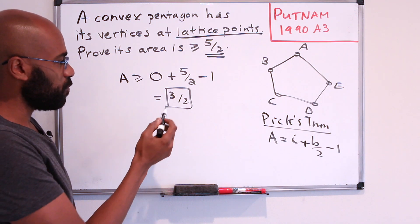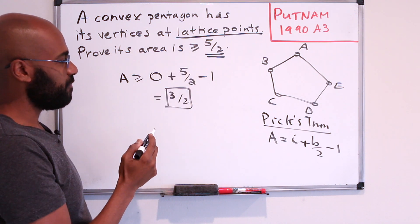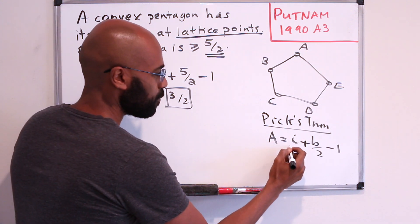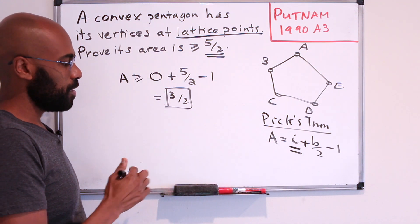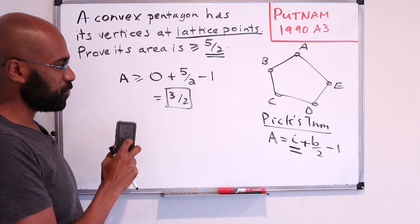So one way to try to do this is if you want to bump this up to get a lower bound of 5 halves, we can try to prove that there's at least one interior lattice point. Alright, so let's go ahead and try to actually do that.